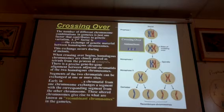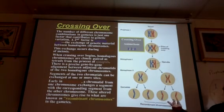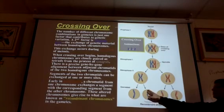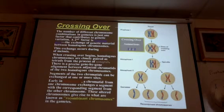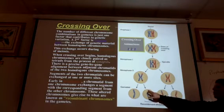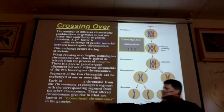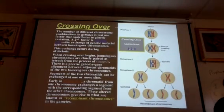If it doesn't cross over, it stays the same. That's variety, isn't it? If it wasn't for crossing over, you'd only have two different gametes, as far as the chromosome goes. But now, look — you've created a brand new chromosome that's probably never, ever existed before in the history of humankind. This chromosome right here is called a recombinant chromosome — a recombined chromosome.